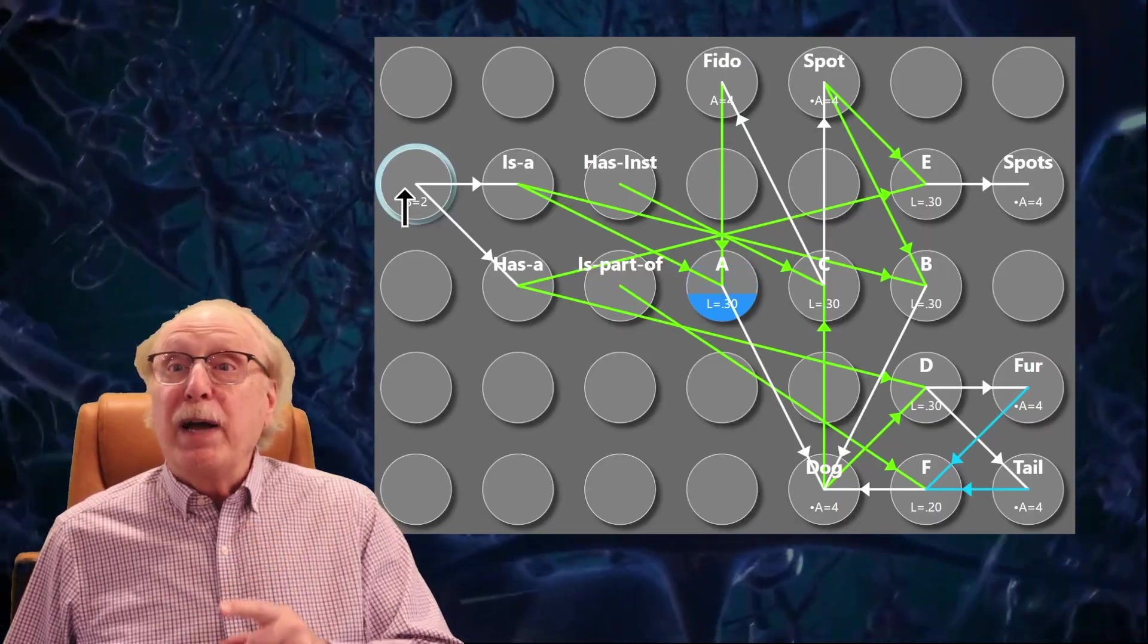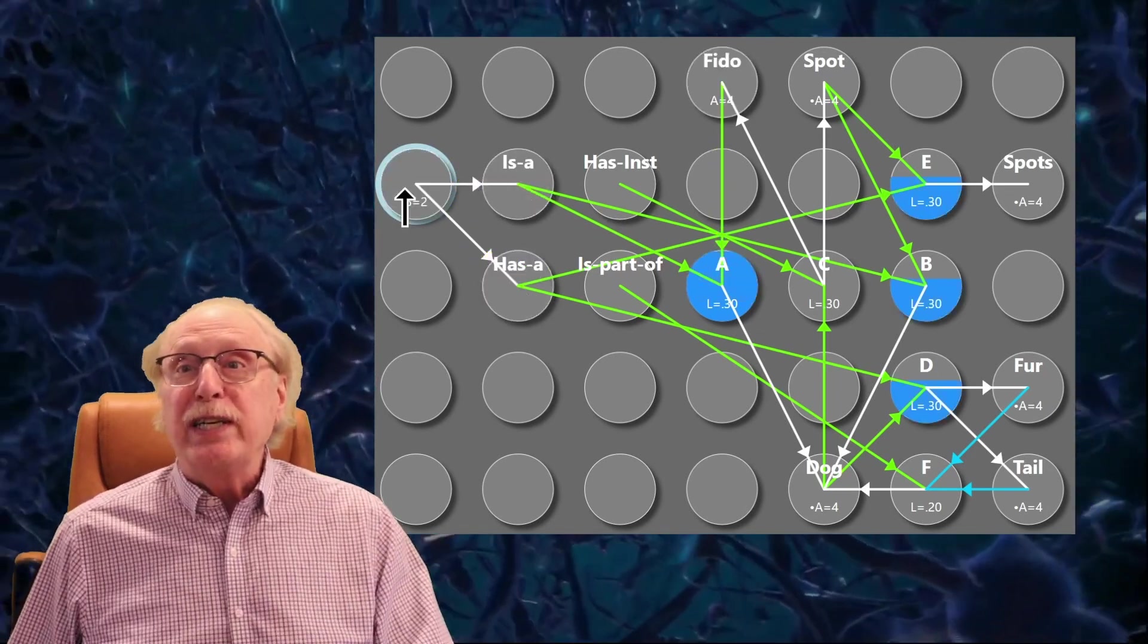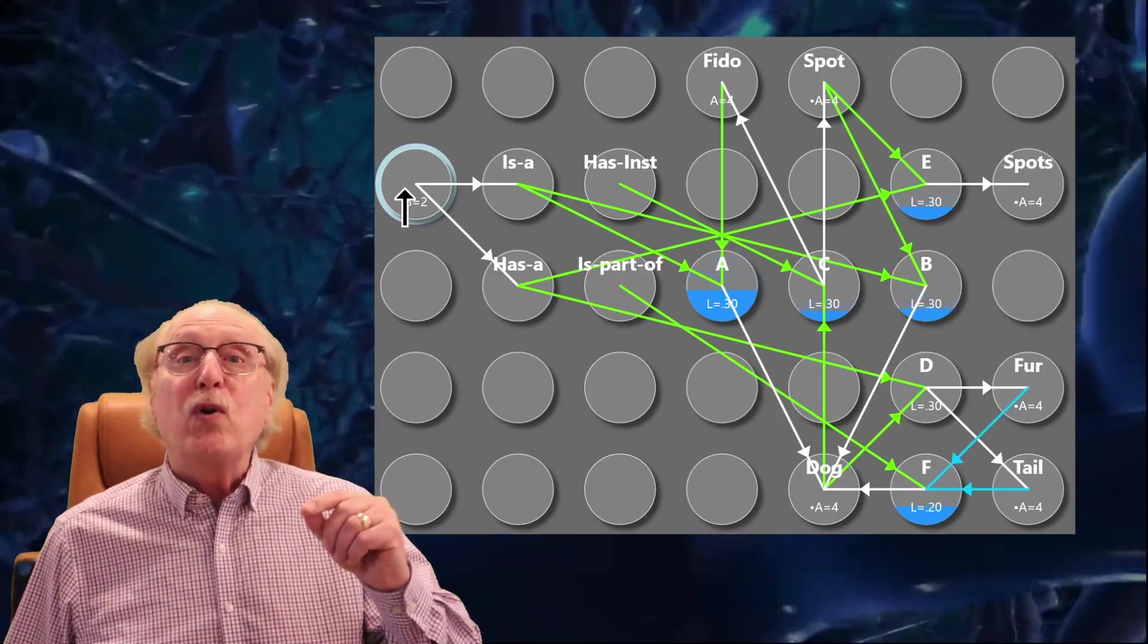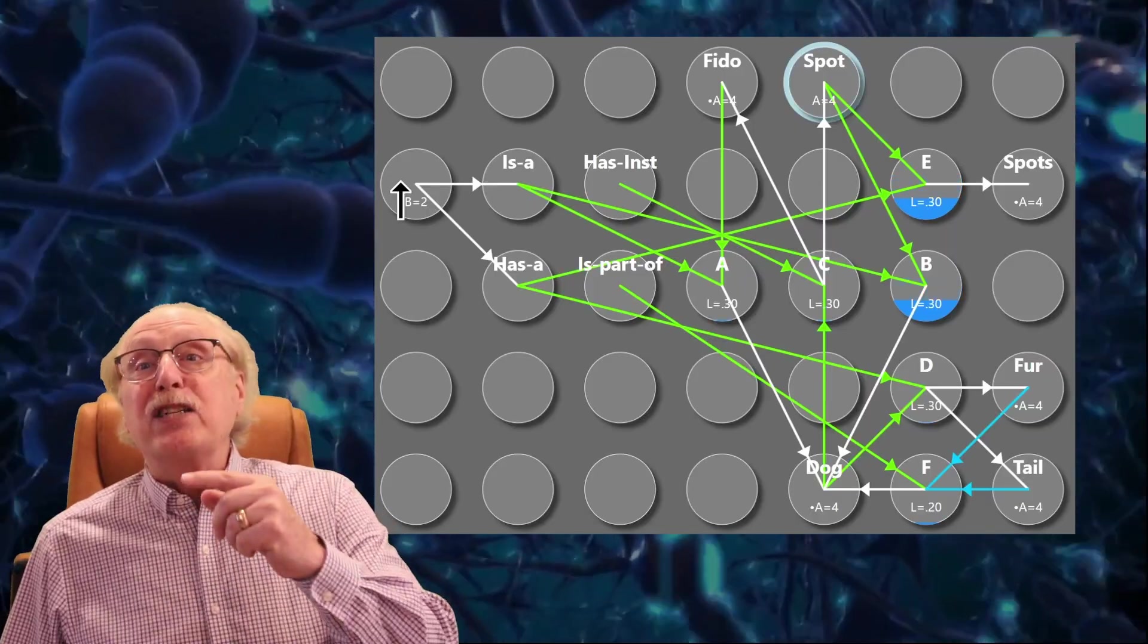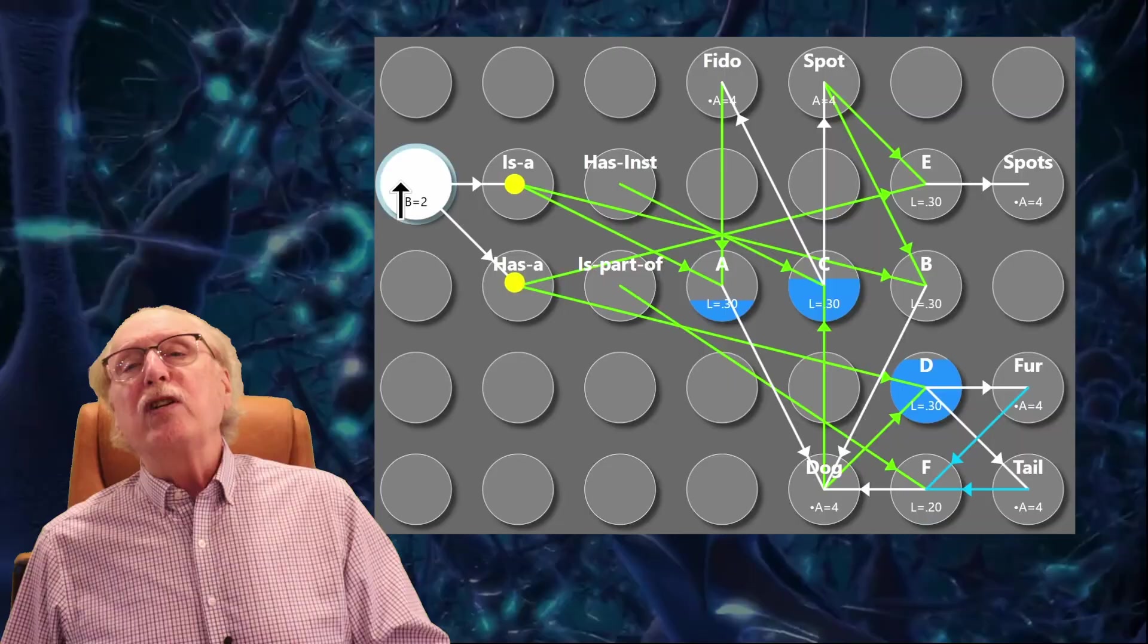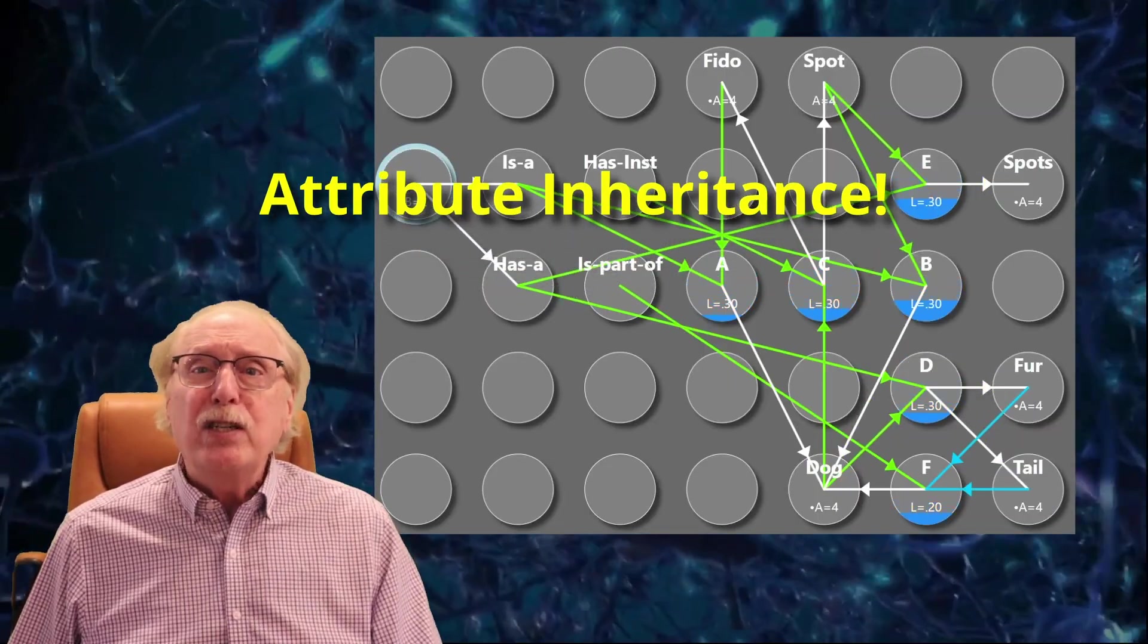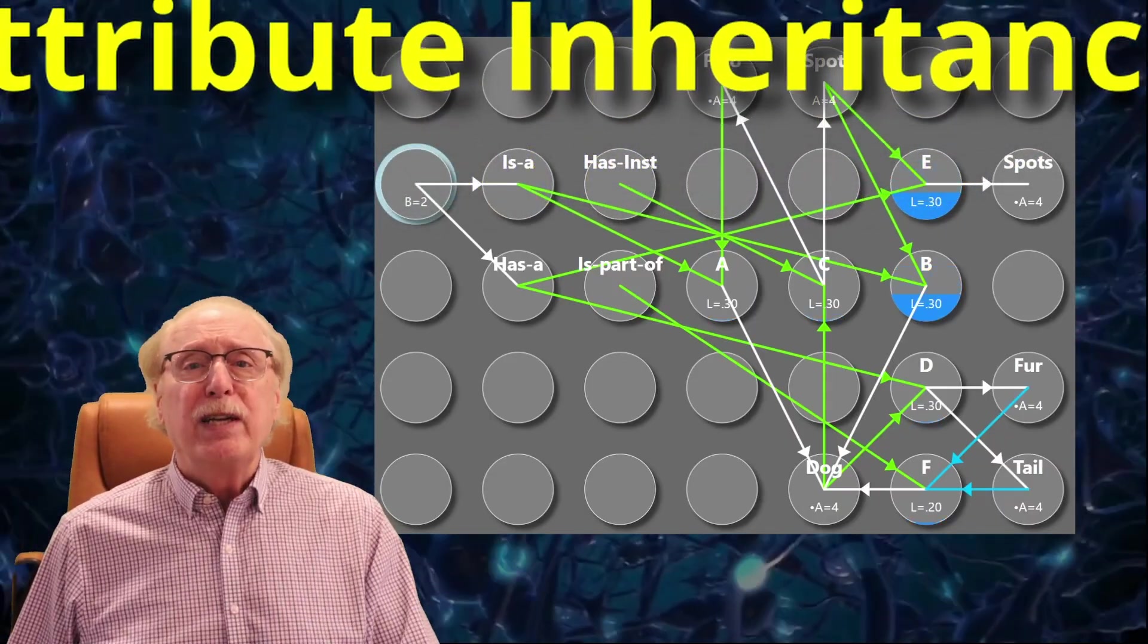But if I contrive to fire both the is a and has a relationships at the same time, we can see that Fido also has fur and a tail. And we can even see that Spot has spots and fur and a tail. With this simple circuitry, we're already seeing the basics of attribute inheritance. This is huge, and you'll learn why in future videos.